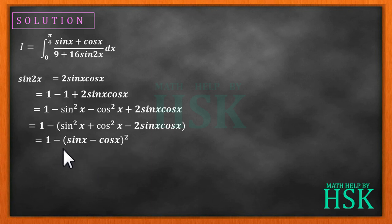Placing the value of sine of 2x in the given definite integral we get sin x plus cos x upon 9 plus 16 times 1 minus sin x minus cos x whole square dx from the limit 0 to pi by 4.